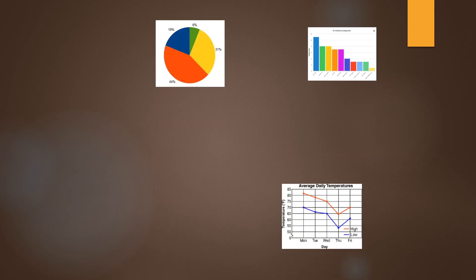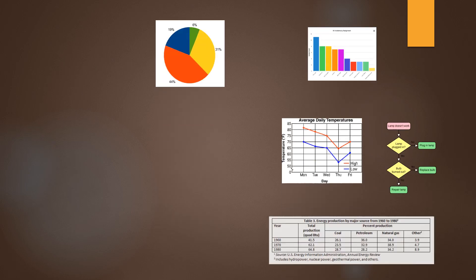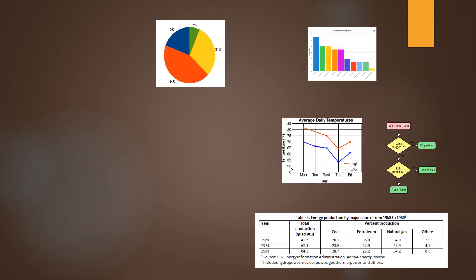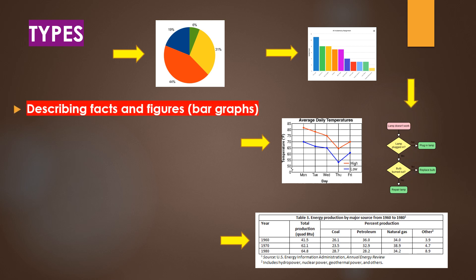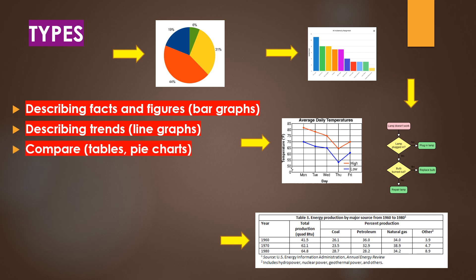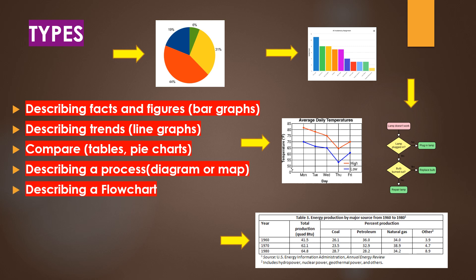Now let's take a look at the types of graphs that we can get. It can be anything like a bar graph, pie chart, line graph, flow chart, or table. If you want to describe facts and figures, take help of bar graphs. Describe trends through line graphs, comparisons through tables and pie charts, describe a process diagram or map, and describe a flow chart.